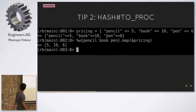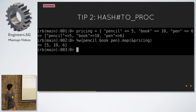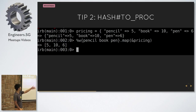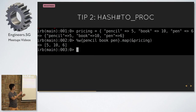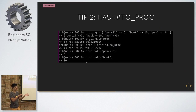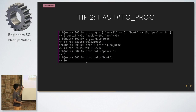This is tip number two. In Ruby 2.3, they added hash to_proc. So let's say you have a pricing hash with pencils, books, and pens with their prices. From an array of keys, you can call `.map` and pass it in. What it does is it calls `to_proc` on the hash, and then it will call the key on the hash — like `proc.call(key)` — so you can do something like that.